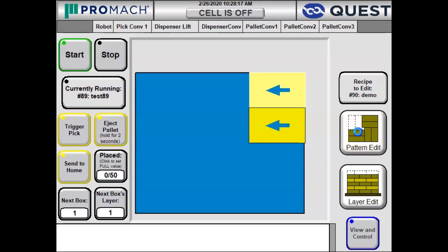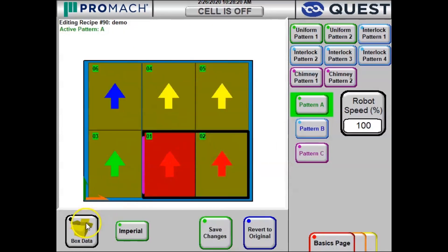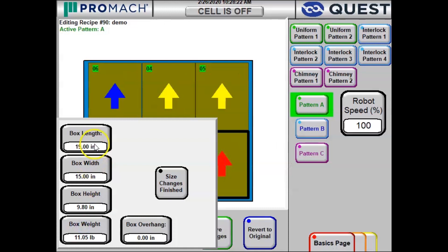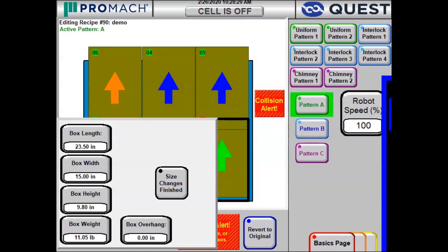Then we go to Pattern Edit and we go to Box Data, and from here we can modify the box dimensions. We're going to call this box 23.5 inches long and 7.8 inches wide.